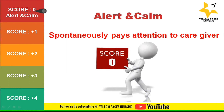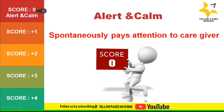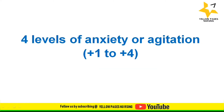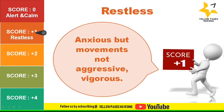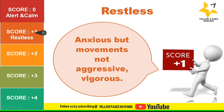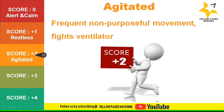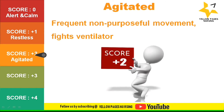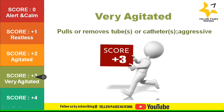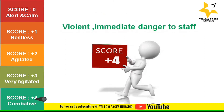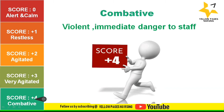Score zero denotes alert and calm — the patient spontaneously pays attention to the caregiver. Next come the four levels of anxiety or agitation. Score plus one denotes restless: the patient is anxious but movements are not aggressive or vigorous. Score plus two, agitated: patient has frequent non-purposeful movements and fights the ventilator. Score plus three, very agitated: patient pulls or removes tubes or catheters and is aggressive. Score plus four, combative: patient is violent and is an immediate danger to staff.